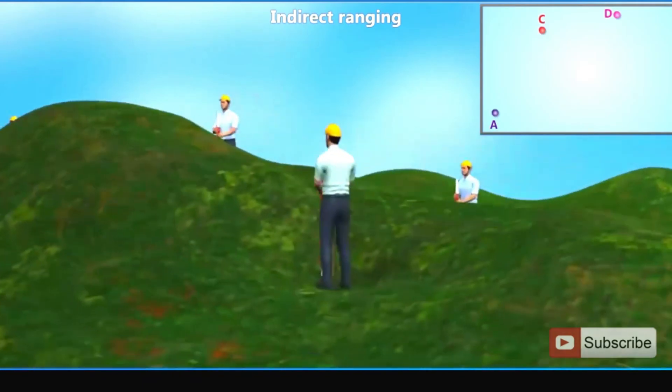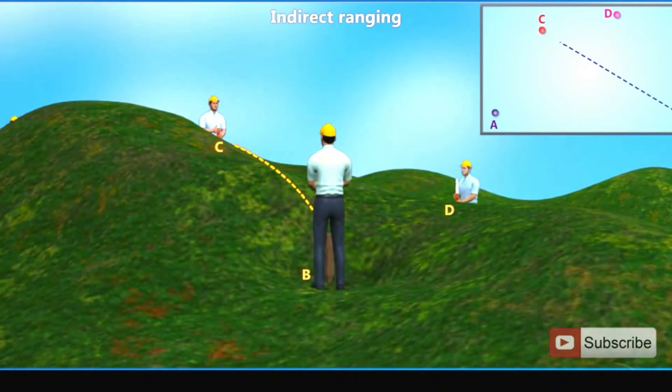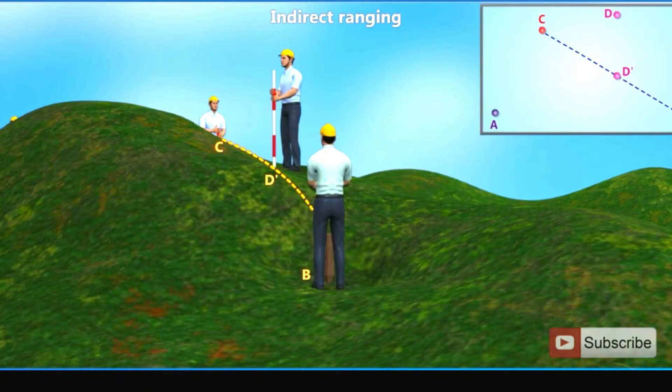Range station C from station B and adjust station D to new position D' which lies in straight line BD'C.